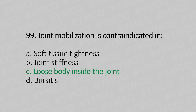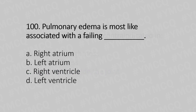Question 100: Pulmonary edema is most likely associated with a failing — option A: right atrium; option B: left atrium; option C: right ventricle; option D: left ventricle. The answer is option D: left ventricle.